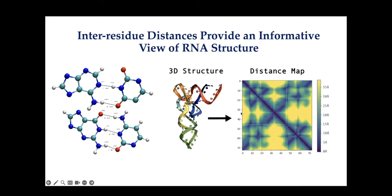We consider the distance between the N1 and N9 atoms of the side chain. For this tRNA example, there are clearly regular structural patterns observable in the distance map. These tend to be a lot more straightforward to predict in the deep learning context, as opposed to predicting the 3D structure directly, which tends to be more unstable and difficult using machine learning techniques.